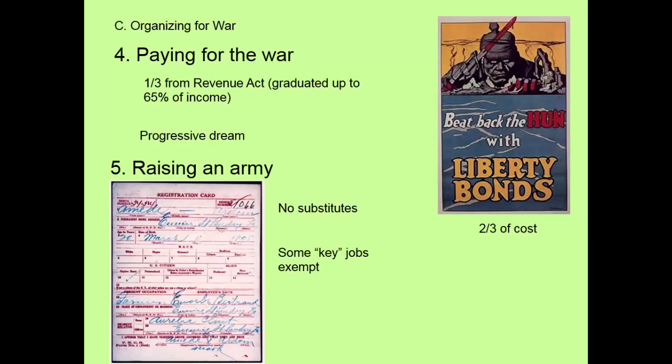Paying for the war: wars are expensive. The government could print more money, but that causes inflation. They could raise taxes, but that lowers workers' pay and could cause more strikes. The best solution is to borrow money — the United States government will borrow about two-thirds of the cost of the war in the form of bonds. A bond is when you loan the government money. To convince people to do this, the government launches a propaganda campaign with posters like 'Beat Back the Hun,' showing a menacing, bloody German coming for America, urging people to buy liberty bonds.